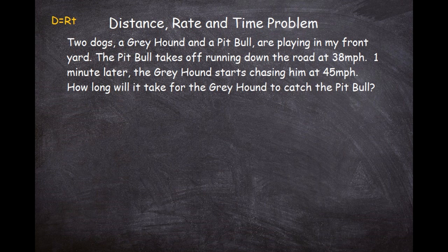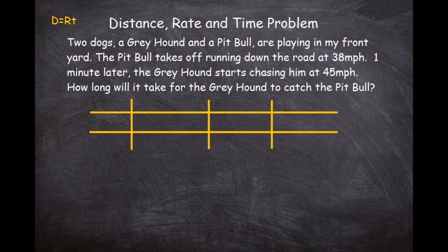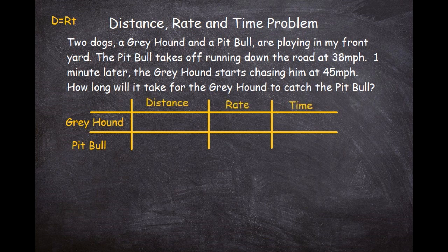For a more complicated problem like this, you want to set up a table and plug in all the necessary information. We'll set up our table with the greyhound and pit bull as rows, and the three columns will be distance, rate, and time. If we can completely fill out this table, we'll definitely have the answer.